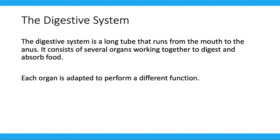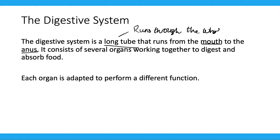So the digestive system is a long tube which runs from the mouth to the anus, so it runs through the whole body. It consists of several organs, and any organ system consists of several organs working together to digest and absorb food.